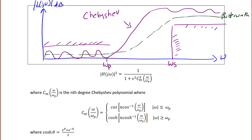The magnitude squared of the Chebyshev filter is 1 over 1 plus epsilon squared times C sub n squared of omega over omega P, where C sub n of omega over omega P is the nth degree Chebyshev polynomial. This is defined as the cosine of n times arc cosine of omega over omega P when frequency is less than omega P, and the hyperbolic cosine of n times the inverse hyperbolic cosine of omega over omega P when omega is greater than omega P. The hyperbolic cosine of theta equals e to the theta plus e to the negative theta, divided by 2.